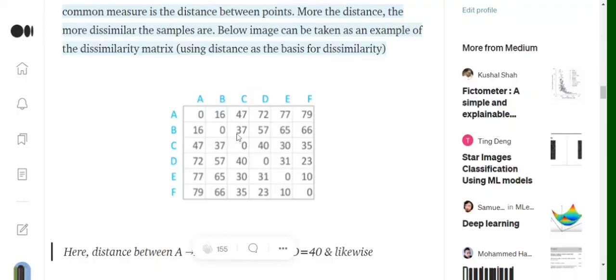As shown in the example below where we have six points, for example, the dissimilarity between E and F is 77—it can be some distance or something else. But the dissimilarity value between A and B is 16. This means that A and B are more similar as compared to E and F.